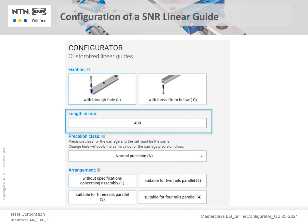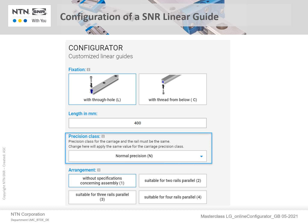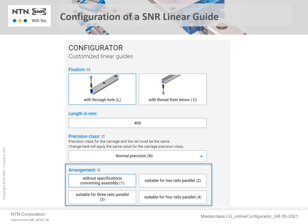Then the precision class is selected. In this example, we will leave it at the standard normal precision level. Next, the rail arrangement can be specified below. This is more important when considering high precision classes. For normal precision cases, it can stay at 1.